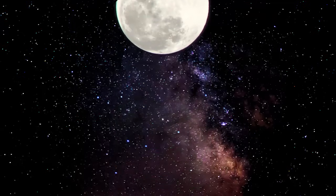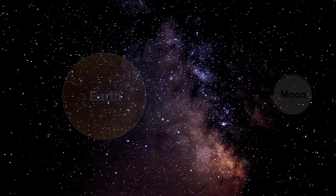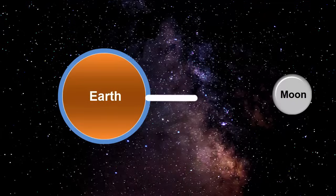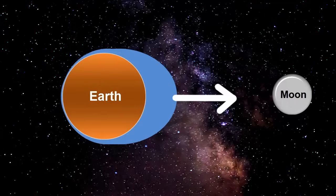Tides are caused by the moon's gravitational force pulling on the Earth and its oceans with different strengths. The pull on the nearside ocean is the strongest because it's the closest, so it moves most towards the moon.